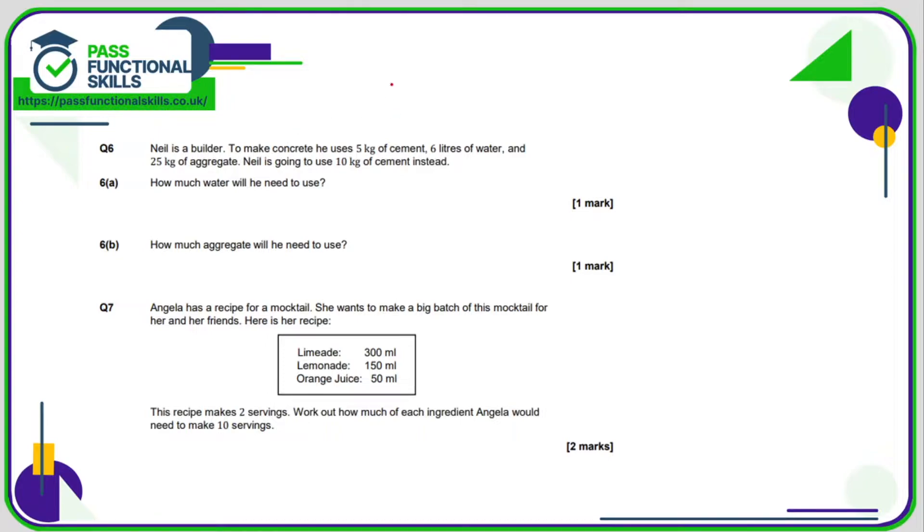Neil the builder needs five kilos of cement, six liters of water, and 25 kilos of aggregate. But if he's using 10 kilos of cement, that means he's doubling the recipe, so he's going to need double the water. Six times two is 12 liters, and for aggregate 25 times two which is 50 kilos.